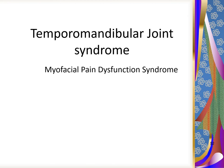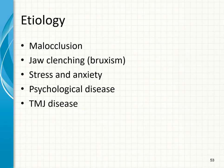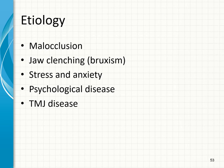Temporomandibular joint syndrome was earlier thought to be synonymous with myofascial pain dysfunction syndrome, but they are now recognized as two different entities. TMJ syndrome can occur following myofascial pain dysfunction syndrome or secondary to a true articular disease such as one of the arthritides. Most TMJ problems are due to malocclusion and bruxism, although psychological factors such as stress and anxiety are also mentioned in the etiology. Malocclusion may be iatrogenic, such as from an abnormally high dental filling leading to improper occlusion and TMJ problems.